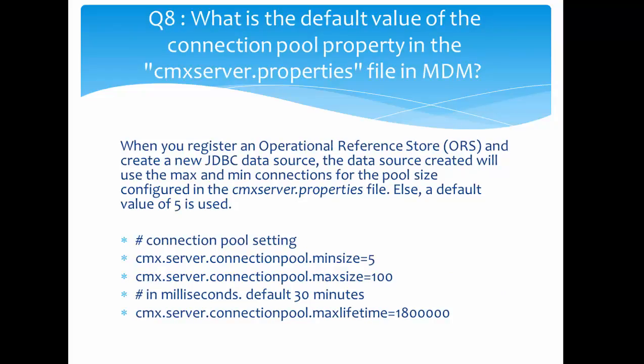The next question is: what is the default value of the connection pool? Connection pool properties are available in CMX_server.properties. This file maintains MDM-related properties. The relevant properties are: CMX.server.connection_pool.minimum_size, CMX.server.connection_pool.maximum_size — with minimum size of 5 and maximum size of 100 — and CMX.server.connection_pool.max_lifetime, which is 1.8 million milliseconds, equivalent to 30 minutes.